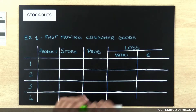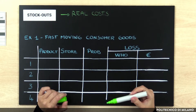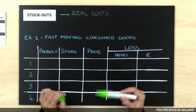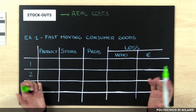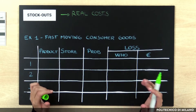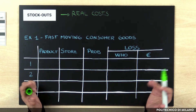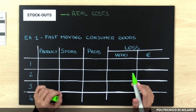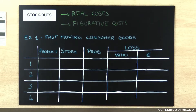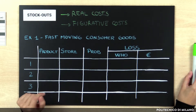We can have real costs, such as penalties, losses related to extra discounts according to the customers in order not to lose the orders, extra administrative or logistics costs — for example when the missing products are shipped later in a separate delivery. And we can have figurative costs, that is, lost profits deriving from current and future lost sales.